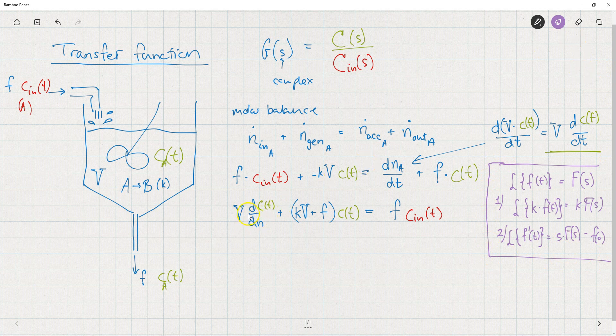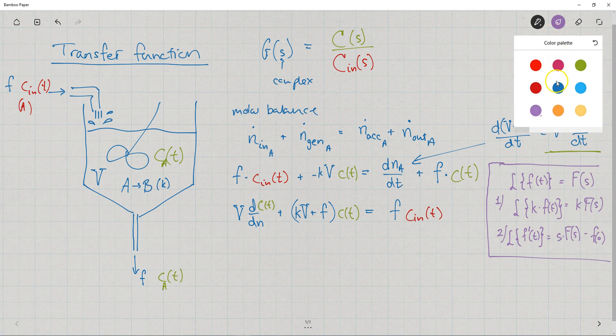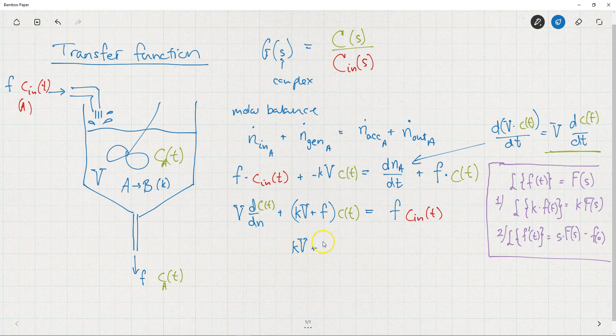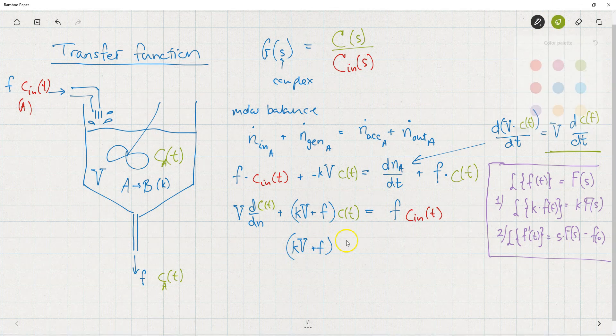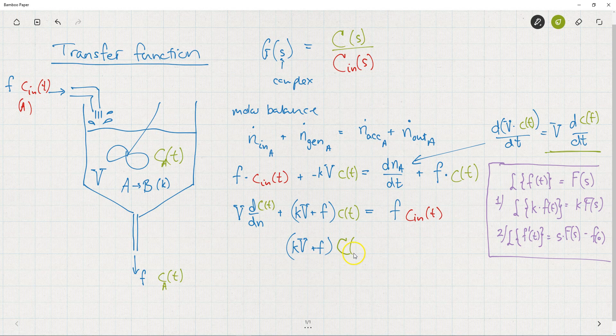Let's look at the middle term, actually. There we have a constant, K times V plus F, that's just a number, it's a constant, times C of T. If I Laplace transform this term first, what I would get is K times V plus F times the Laplace transform of C. And I decided to call that capital C of S. I don't know what function it is, but I'll just call it capital C of S.